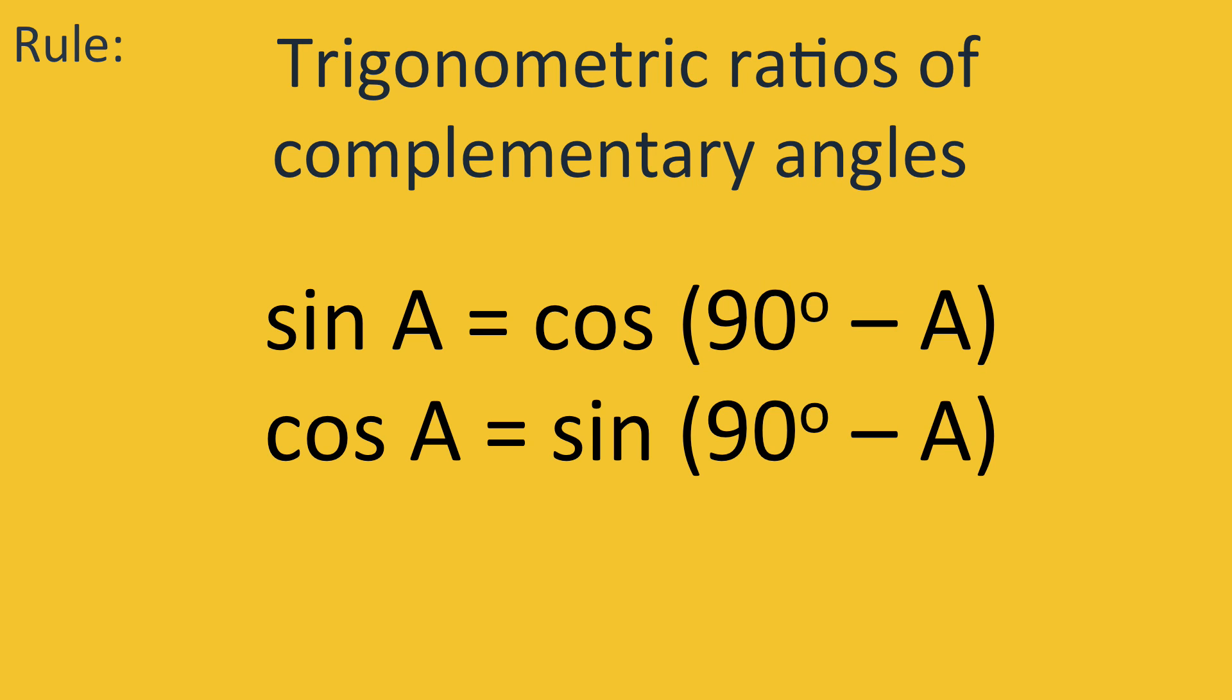In conclusion, because angles a and B in a right-angled triangle are complementary, we can say that sine of angle a is equal to the cosine of its complementary angle, and cosine of a is equal to the sine of the complementary angle.